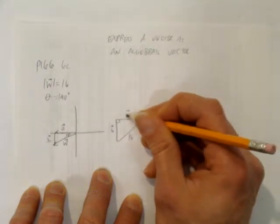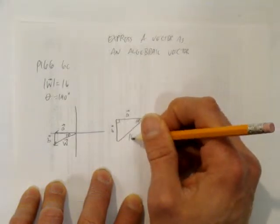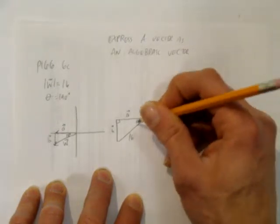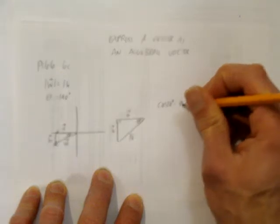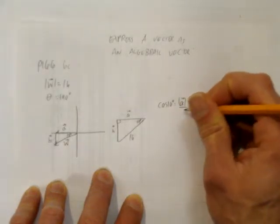The a is the adjacent side to 10 degrees. The 16 is hypotenuse. Since we're using adjacent hypotenuse, that's cosine. The cosine of 10 degrees is vector a's magnitude over 16.